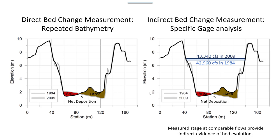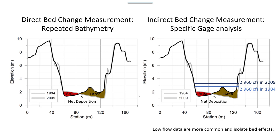If we pair stage and discharge, we can infer information about how a system has changed over time. If you assume that for a given flow an equilibrium reach will produce the same stage, then if the stage associated with a given flow increases over time you can infer deposition, and vice versa — if stage associated with a given flow decreases with time you can infer erosion. In this fictional case, the stage has increased from 1984 to 2009, so we can infer historical deposition. This actually works better with lower flows because lower flows are more common — easier to find exact matches — and the volume change of the bed is a larger percentage of the total volume, so you can see these changes more clearly.